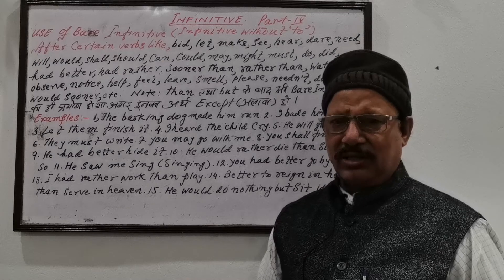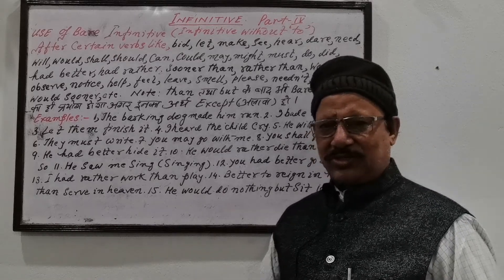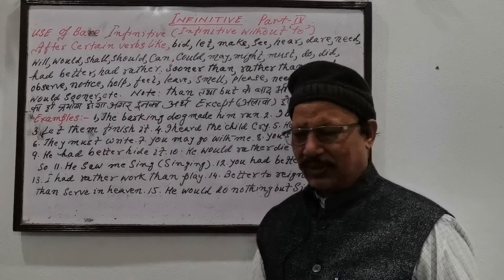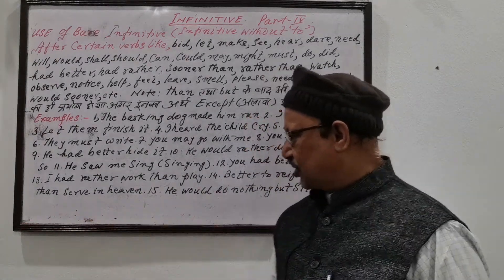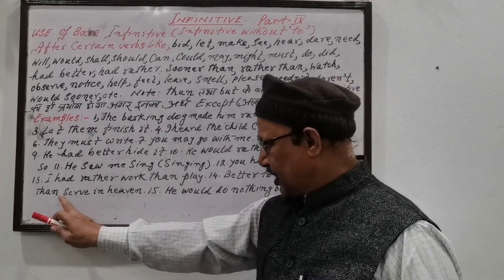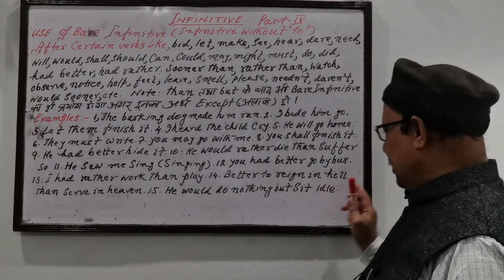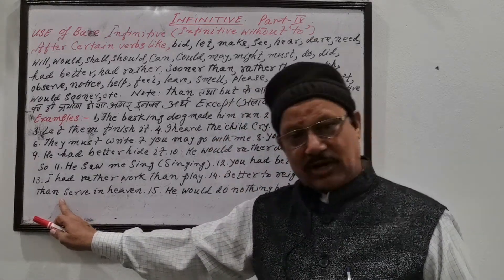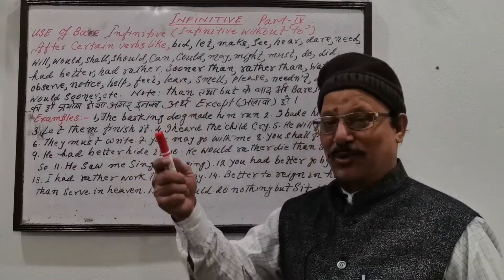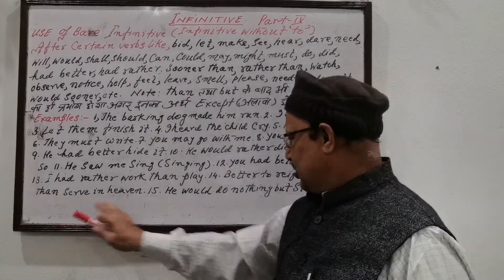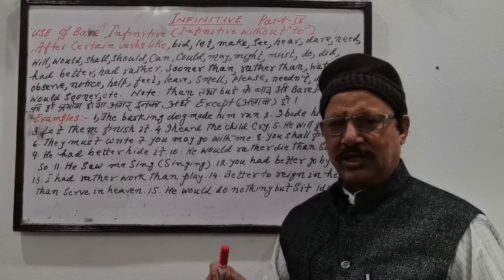'Better to reign in hell than serve in heaven' — It is better to rule in hell than to go to heaven and live as a slave. This is a very good sentence illustrating that no one likes slavery, even in heaven. Note: in many competitions, 'to' is mistakenly inserted — 'better to reign in hell than to serve in heaven' — so be careful. This omission of 'to' is as important as the omission of articles. Final example: 'He would do nothing but sit idle' — He preferred to do nothing but sit quietly.